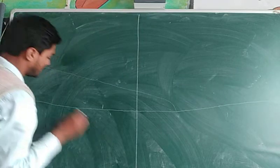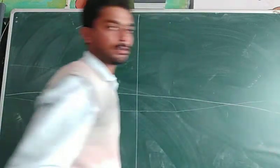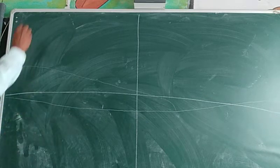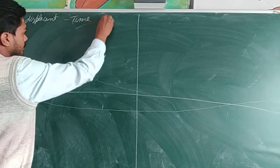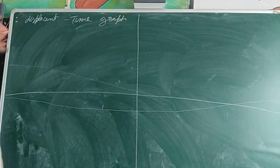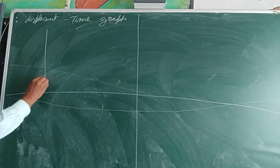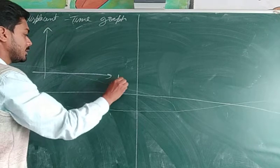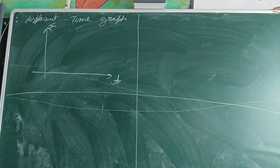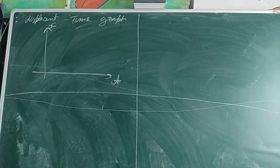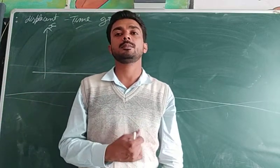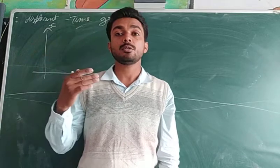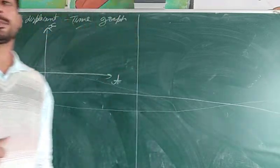The first graph we are going to study is the displacement-time graph. In the displacement-time graph, we are going to study how displacement varies according to time during any motion. There may be uniform variation in displacement, or there may be non-uniform variation in displacement. We are going to identify these situations using the graph.